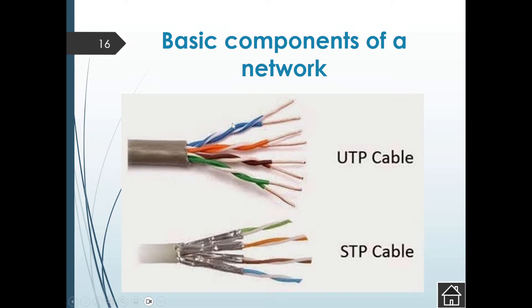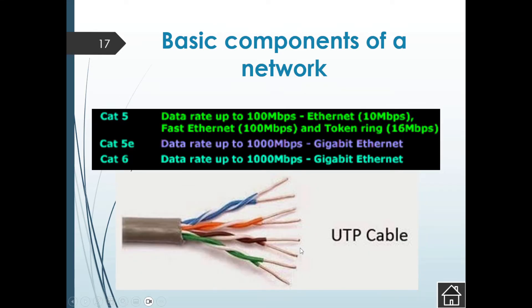UTP is one of the most common network cables. There are different categories: Cat 5 supports up to 100 megabits per second, while Cat 5e and Cat 6 can reach up to 1,000 megabits per second. Cat 6 compared to Cat 5 is ten times the data transfer speed per second. These categories indicate the speed at which data can be transferred.